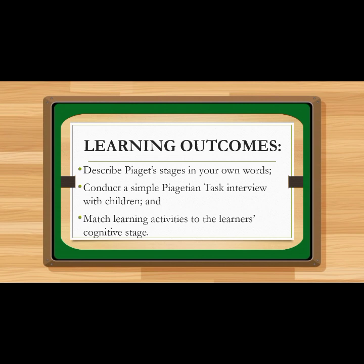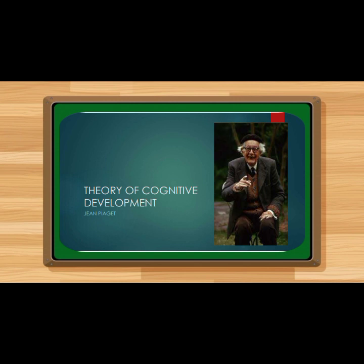Jean Piaget's cognitive theory of development is truly a classic in the field of educational psychology. Psychology includes different subfields and refers to the scientific study of the mind and behavior, including areas such as human development, sports, health, clinical, social behavior, and cognitive processes. That is why his theory is called stages of cognitive development, because Jean Piaget is a psychologist.